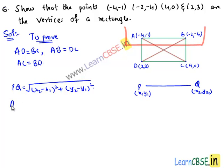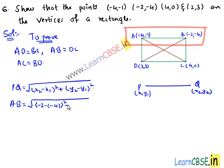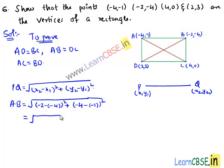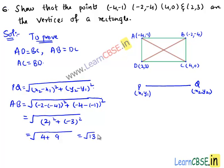AB equals the square root of (x₂ - x₁)² which is (-2 - 4)² plus (y₂ - y₁)² that is (-4 - 1)². That equals the square root of (-2)² plus (-3)² which is equal to the square root of 4 plus 9, which is equal to √13. Hence we got the length AB as √13 units.